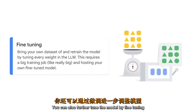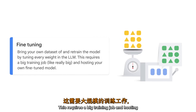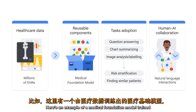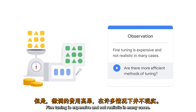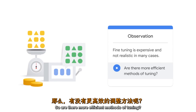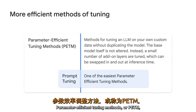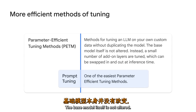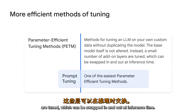You can also further tune the model by fine-tuning, where you bring your own dataset and retrain the model by tuning every weight in the LLM. This requires a big training job and hosting your own fine-tuned model. Fine-tuning is expensive and not realistic in many cases. Parameter-efficient tuning methods, or PETM, are methods for tuning a large language model on your own custom data without duplicating the model. The base model itself is not altered — instead, a small number of add-on layers are tuned, which can be swapped in and out at inference time.